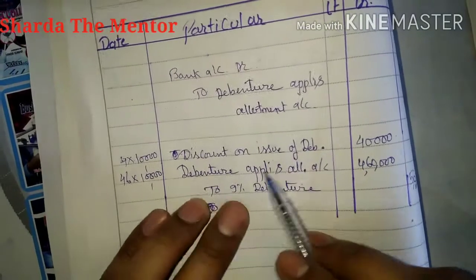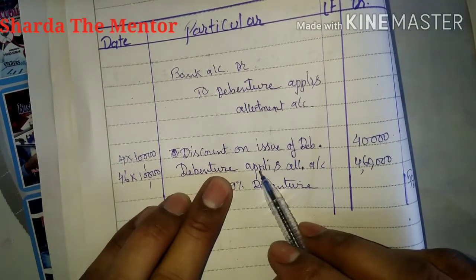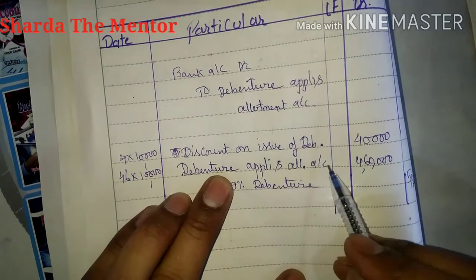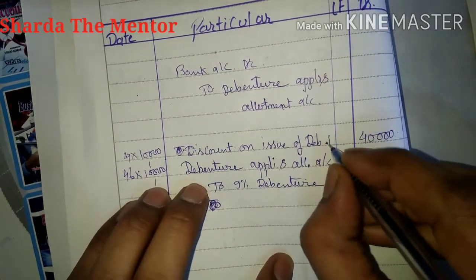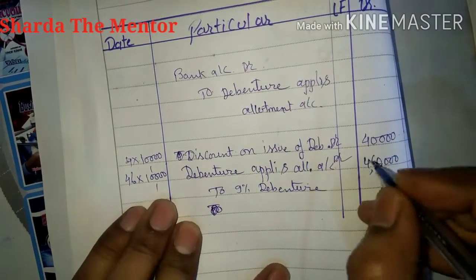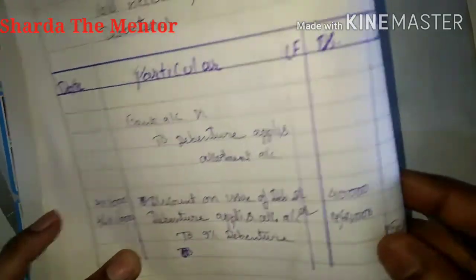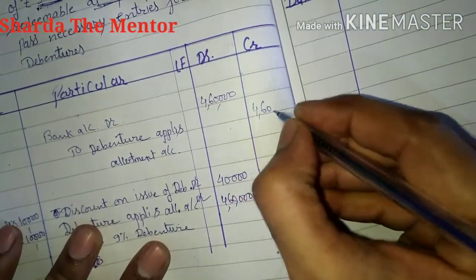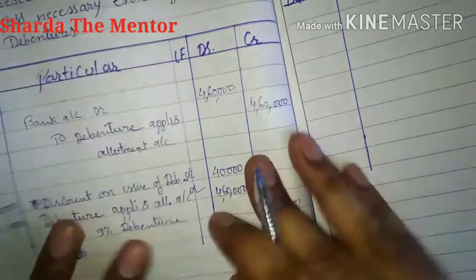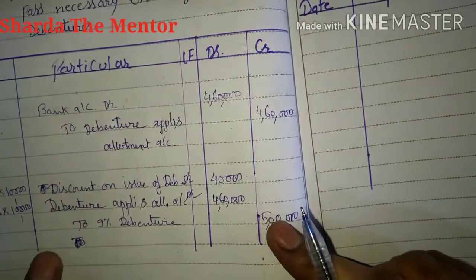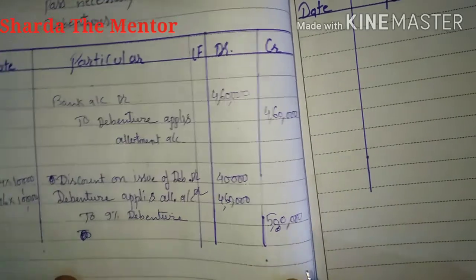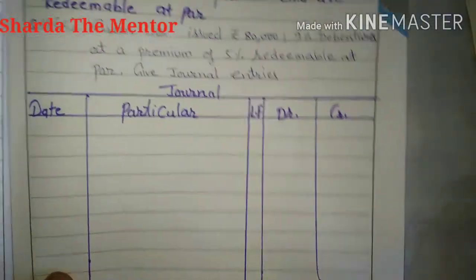In terms of sequence, debenture application and allotment comes first, followed by discount on issue of debenture — although both are debited, that is the general sequence we follow. The remaining amount is four lakh sixty thousand, giving a total of five lakh. This is the same case we already covered in the previous video regarding discount.